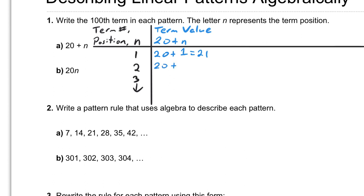For the second term, you would just go 20 plus 2, which is 22. The third term, 20 plus n, in this case n is replaced by 3. You substitute the 3 for the n. So it's 20 plus 3, where you get 23. I think you can see the pattern.